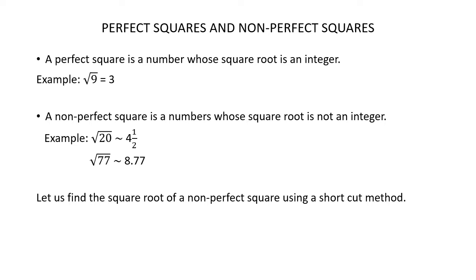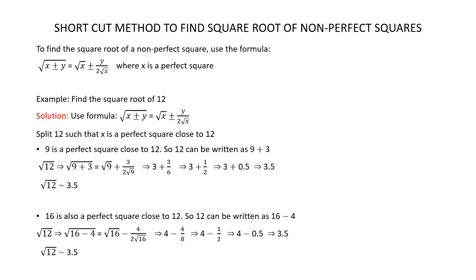Let's find the square root of a non-perfect square using a shortcut method. To find the square root of a non-perfect square, use the formula: the square root of (x ± y) is equal to the square root of x ± y divided by 2√x, where x is a perfect square.